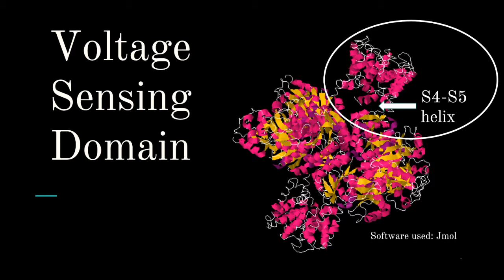During action potential, ions move across the membrane, which changes the membrane potential. As a result of this flux, the electric field across the membrane changes. From physics, we know that electric fields can do work on a charge — in other words, in the presence of an electric field, a point charge can be translated from high to low potential. We can apply this principle to special key residues on the KV channel, which are located on the S4 helix.